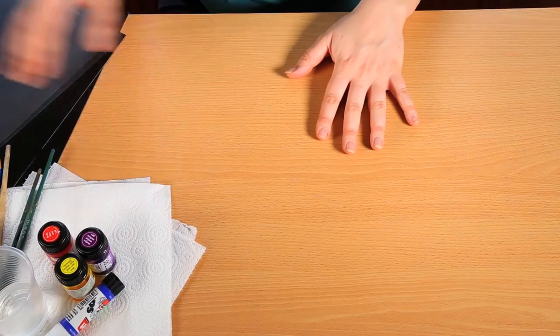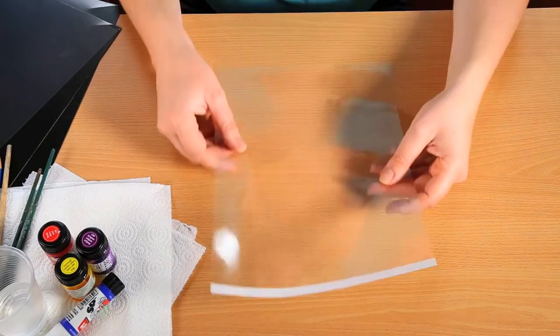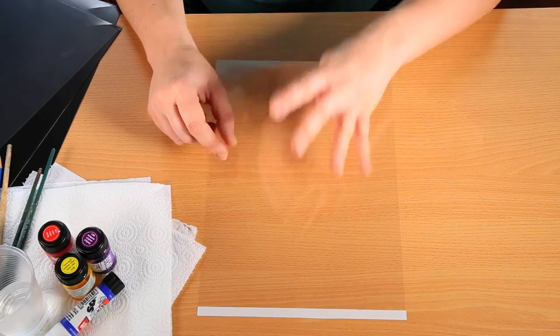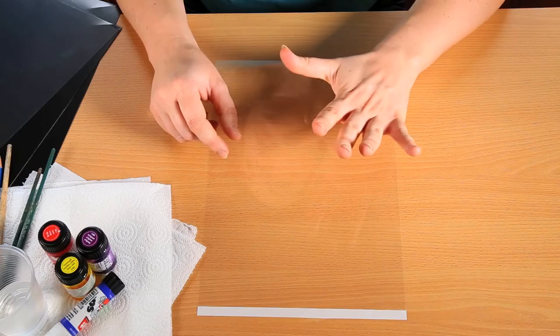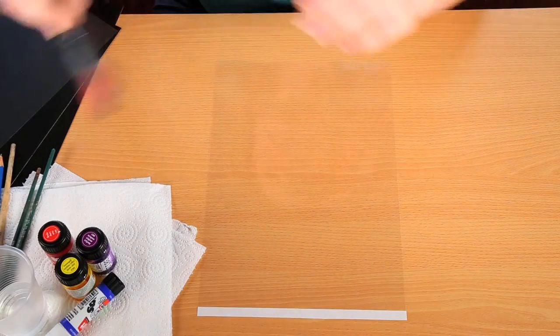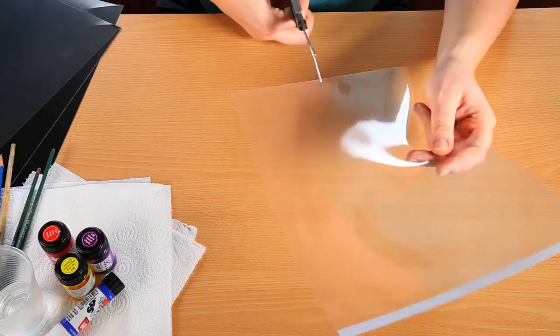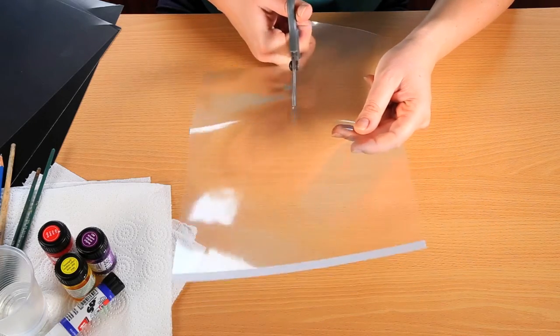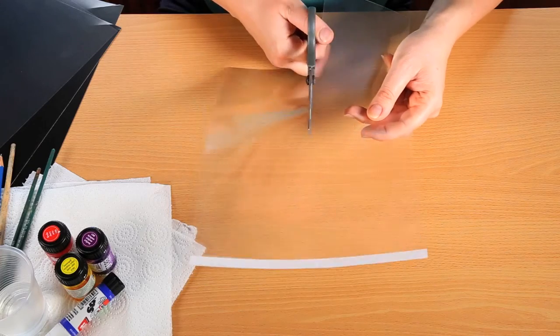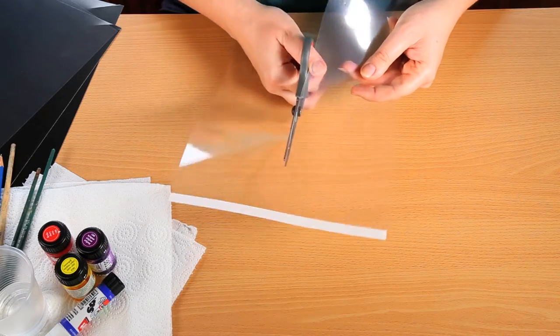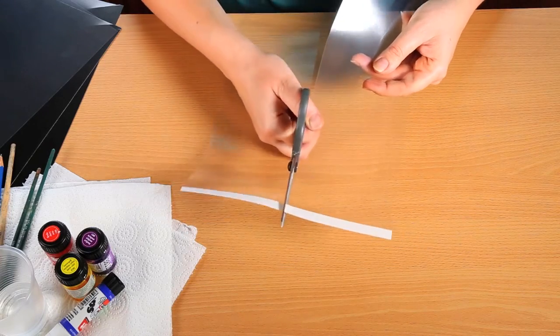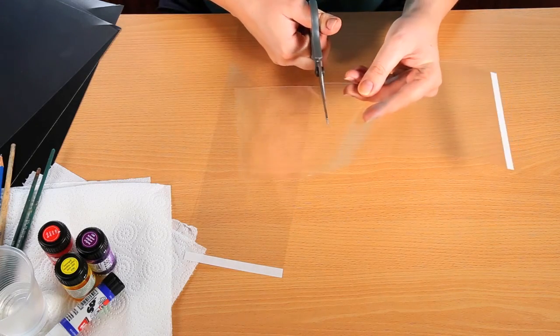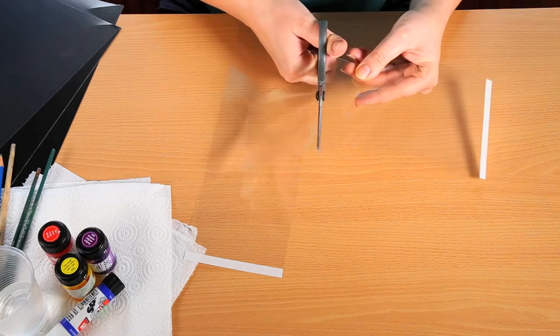So first of all, what you want to do is get your transparent film and you need to make four squares. I would suggest getting the scissors and cutting your four squares now. What you need is two that are exactly the same, so two pairs that are exactly the same size.